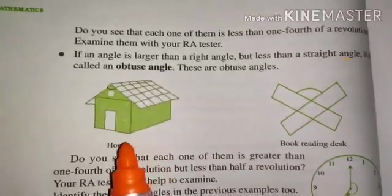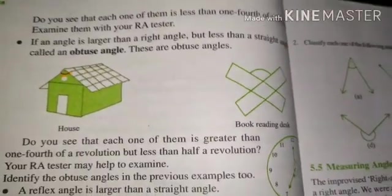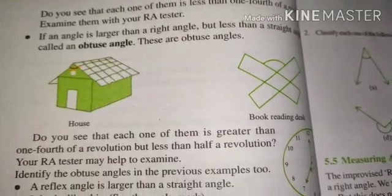Jaise ki, aap hi house dekhi, jaise ki, yahan par jo angle bane ga, woh hai 90 se zyada hoga, jaise 90 se zyada hoga toh hamare kaise angle hoga? Obtuse angle.